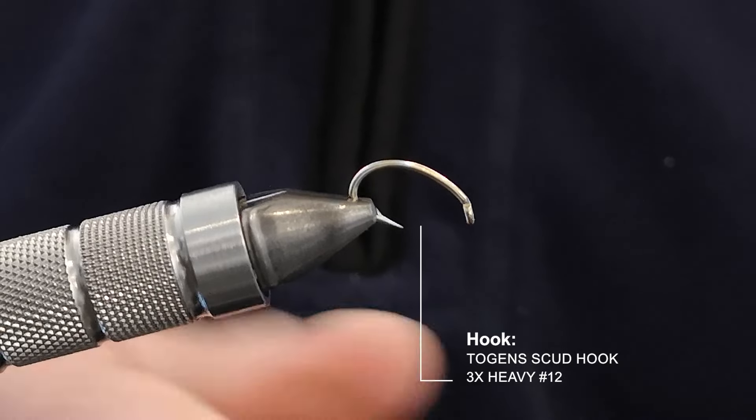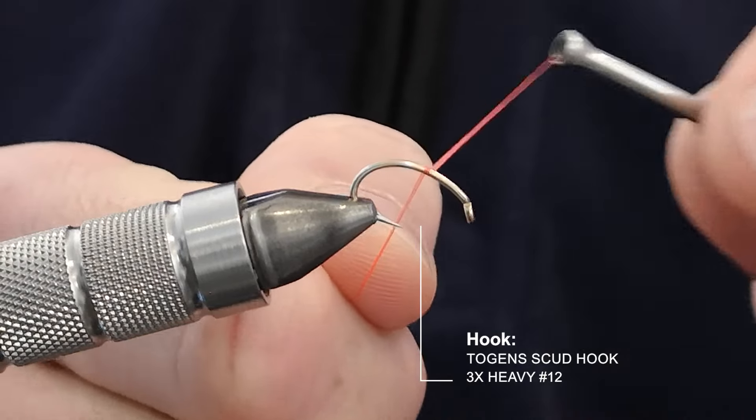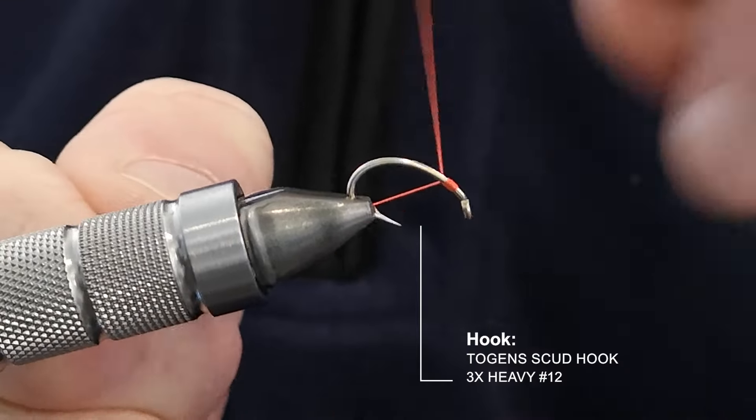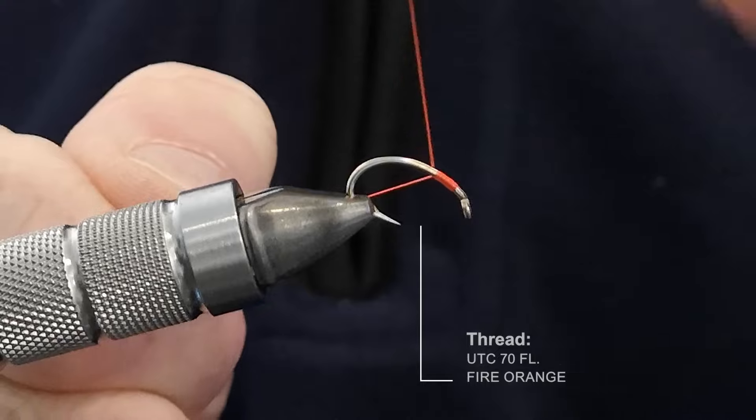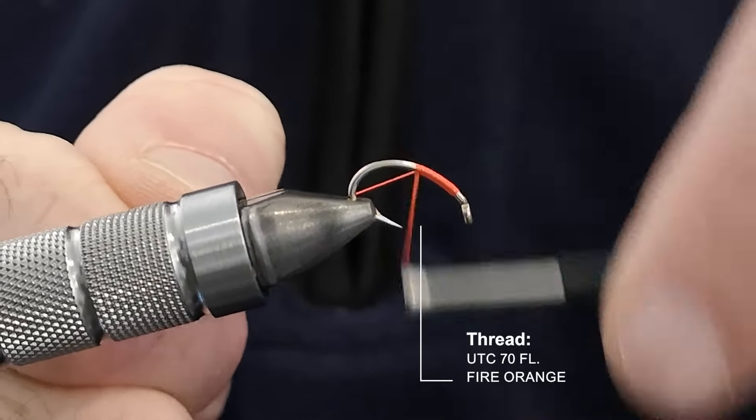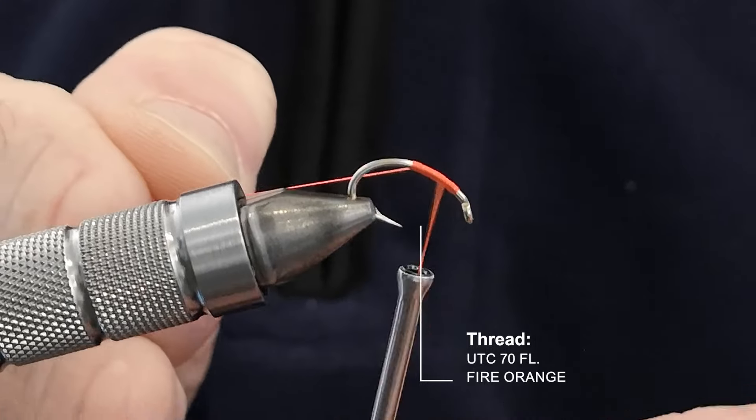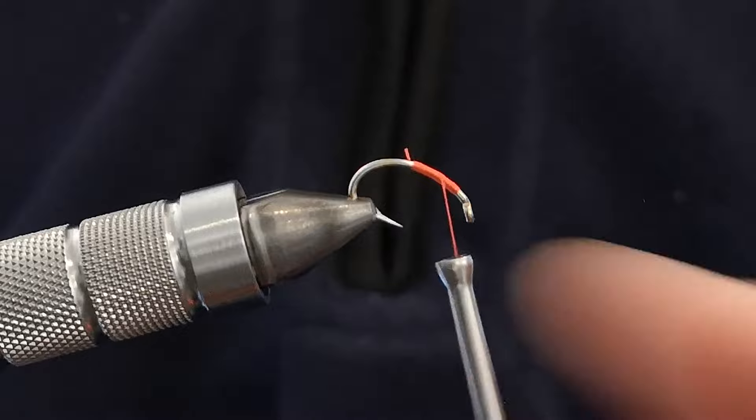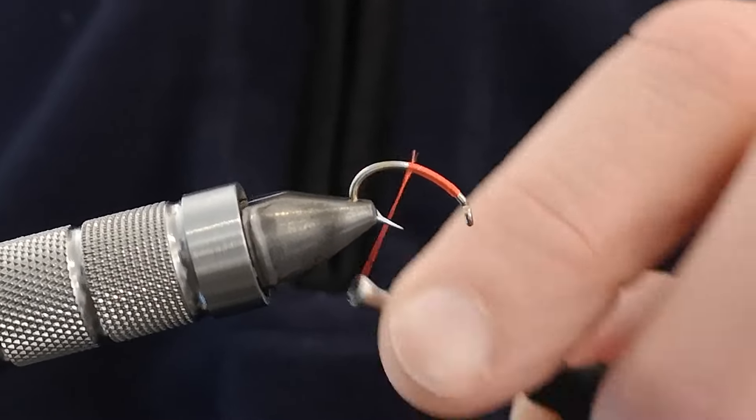We are going to catch the thread on at the eye and the reason I've got the hook at a slightly funny angle is purely because I want to go down into the bend and I don't want that bend obscured by the jaws of my wonderful HMH tying vice. So we are going to snip off the excess and then keep going down.